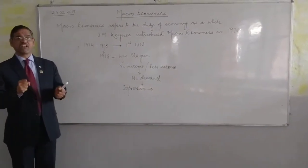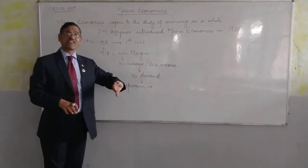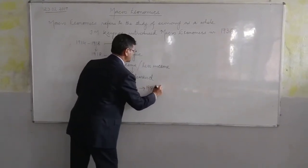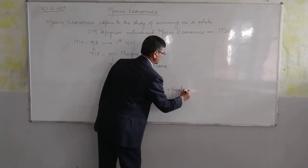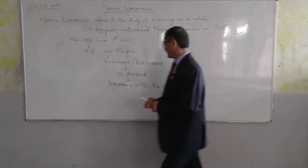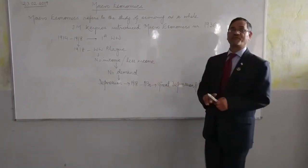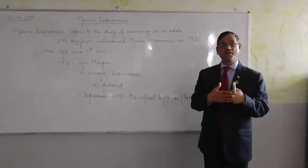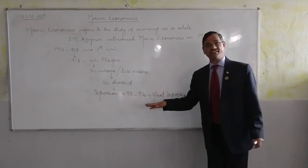What is depression? Depression is a sharp fall in prices and widespread unemployment across the world. We refer to this as the Great Depression, from around 1918 to 1930. The Great Depression is a situation characterized by a sharp fall in price levels and widespread unemployment all over the world.